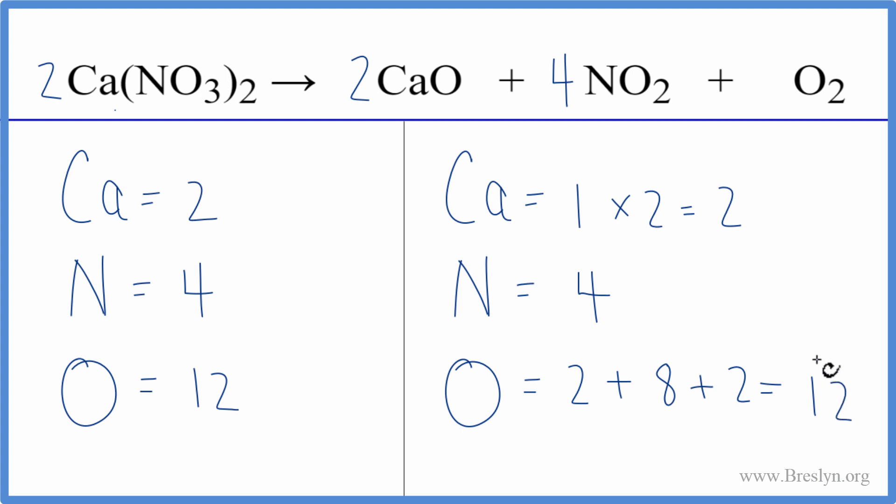This equation is balanced. So the key really is to leave these oxygens to last when you balance the equation. This is Dr. B with the balanced equation for the thermal decomposition of calcium nitrate, Ca(NO3)2. Thanks for watchin'.